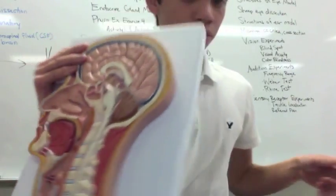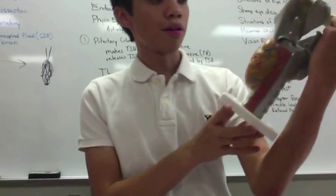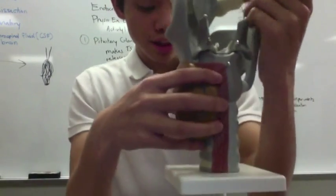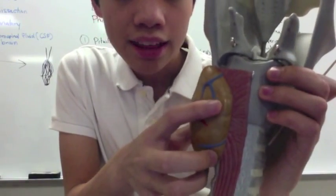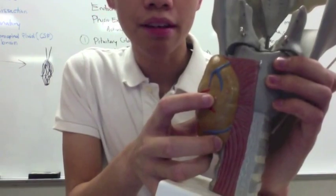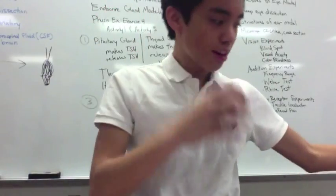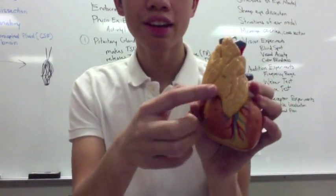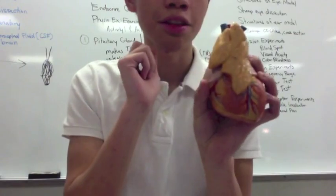Next we have your thyroid gland. This is your thyroid gland. And these two dots right here — that's your parathyroid glands. Then you have the thymus, which is on top of your heart. So this right here is your heart, and this little gland on top of your heart is called your thymus.